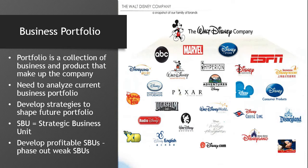Business portfolio analysis is a process in which management evaluates the products and businesses that make up the entire company. Business portfolio planning involves two steps. First, the company must analyze its current business portfolio and determine which businesses should receive more, less, or basically no investment. Second, it must shape the future portfolio by developing strategies for growth and also downsizing. Management must first identify the key businesses that make up the company — these are called Strategic Business Units, or SBUs. An SBU can be a company division, a product line within a division, or even a simple product or brand.